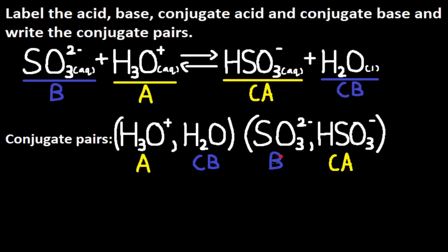Something to note is that the conjugate acid will always differ by an additional H⁺ ion — so HSO3⁻ has an extra H⁺ compared to SO3²⁻, meaning it will also have an additional charge since H⁺ carries a charge. On the other hand, a conjugate base will differ by one fewer H⁺ ion, so H2O has one less H⁺ than its conjugate pair H3O⁺, and therefore one less charge as well.